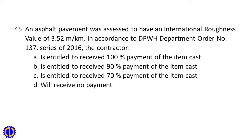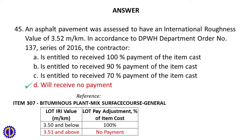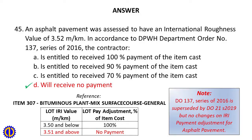Question 45: An asphalt pavement was assessed to have an international roughness index (IRI) value of 3.52 m/km. In accordance with DPWH Department Order No. 137, Series of 2016, the contractor A. Is entitled to receive 100% payment, B. Is entitled to receive 90% payment, C. Is entitled to receive 70% payment, D. Will receive no payment. Answer: D. Will receive no payment. Reference: Item 307 Bituminous Plant Mix Surface Course. Note: D-0137 Series of 2016 is superseded by D-021S 2019, but no changes on IRI payment adjustment for asphalt pavement.